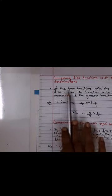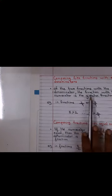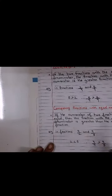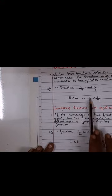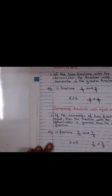Remember this: of the two fractions with the same denominator, the fraction with the greater numerator is a greater fraction. So this you are getting right. Since 5 is greater than 2, so 5 upon 9 is greater than 2 upon 9.